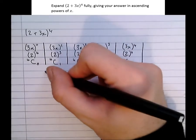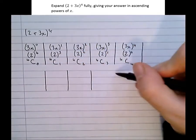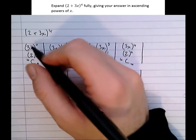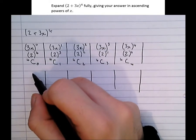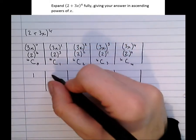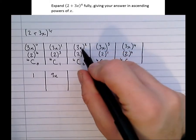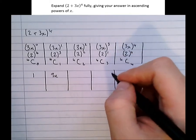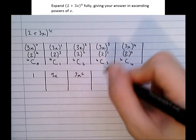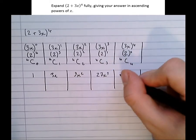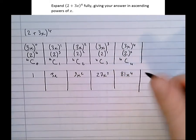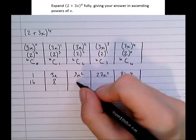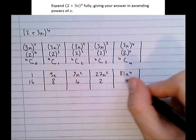Now we're going to simplify each term. (3x) all to the power of 0 is 1 — this is why brackets are important. (3x) to the power of 1 is 3x. (3x) all squared means 3x times 3x, which is 9x squared. Then 27x cubed, and 81x to the 4. For the powers of 2: 2 to the 4 is 16, 2 cubed is 8, 2 squared is 4, 2 to the 1 is 2, and 2 to the 0 is 1.